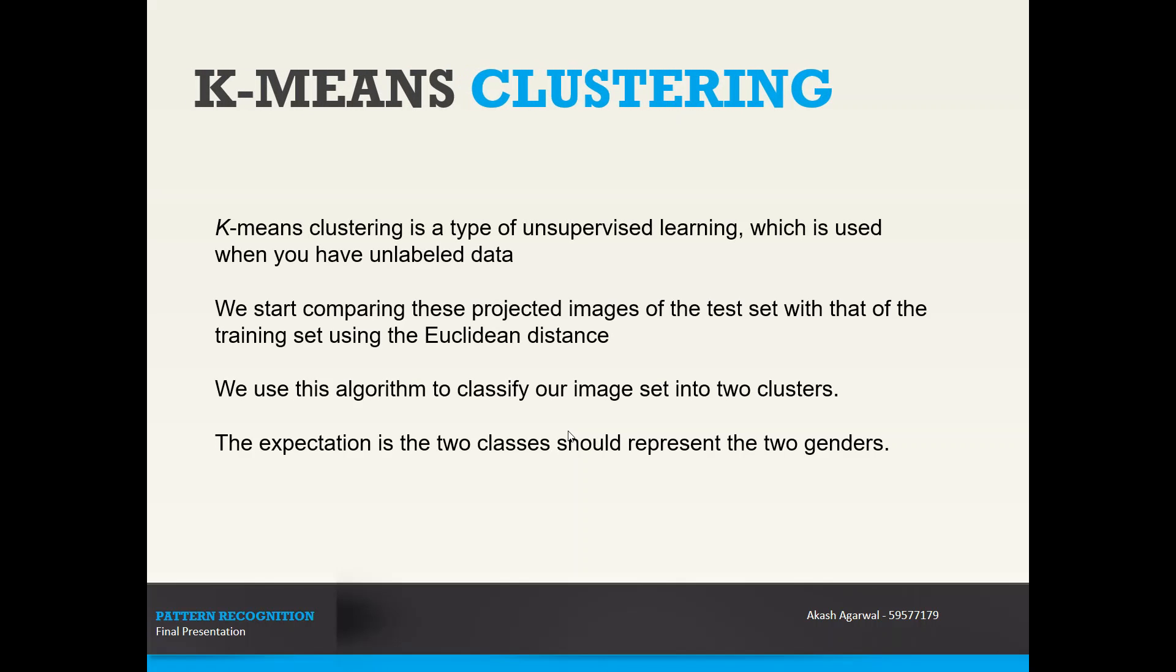Now in this project, we also use k-means clustering for classification of images into clusters. K-means clustering is a type of unsupervised learning algorithm which is used when you have unlabeled data. It is great for identifying homogeneous groups on the basis of certain features. We use this algorithm to classify our input dataset into two clusters. The natural expectation is these two clusters or classes will represent the two human genders of male and female.